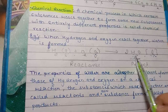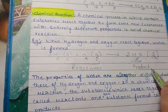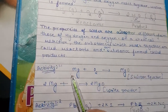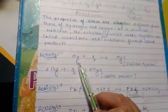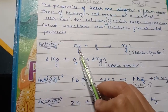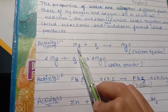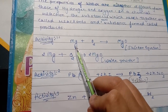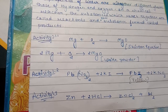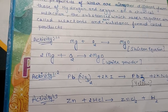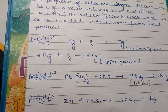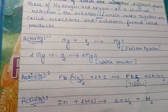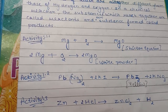Now we move to Activity 1.1. We have to take a magnesium ribbon 2 cm long. First, we have to rub it with sandpaper. Why? Because on the ribbon there is a magnesium oxide layer developed, and this layer does not allow the magnesium ribbon to burn with oxygen.